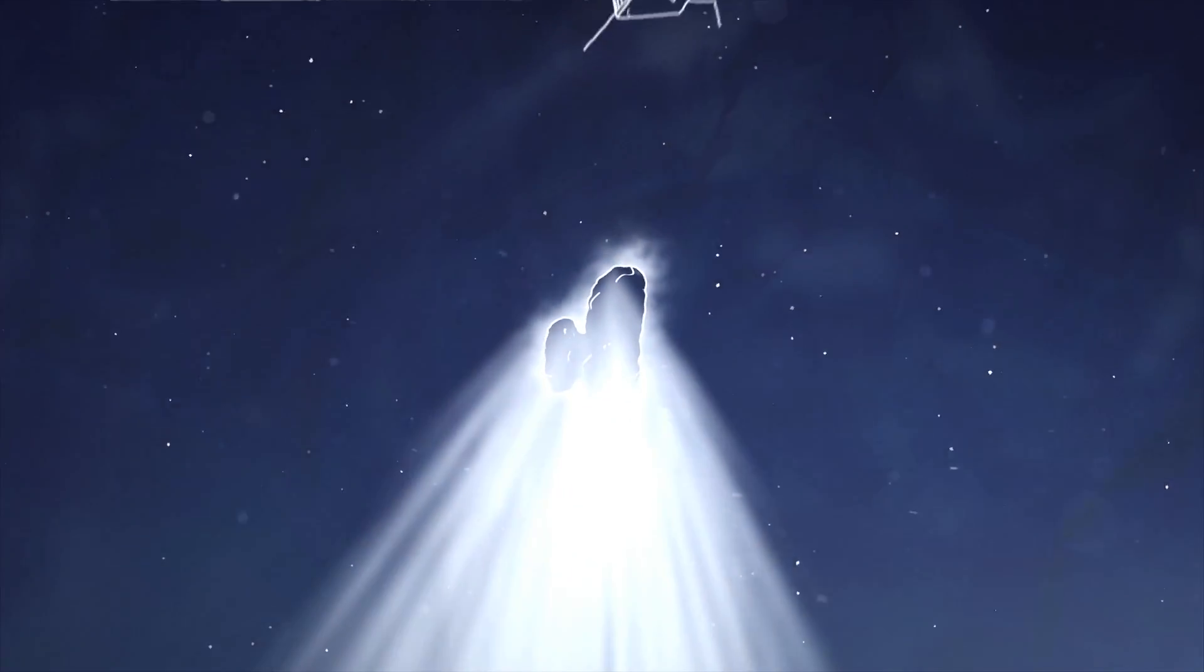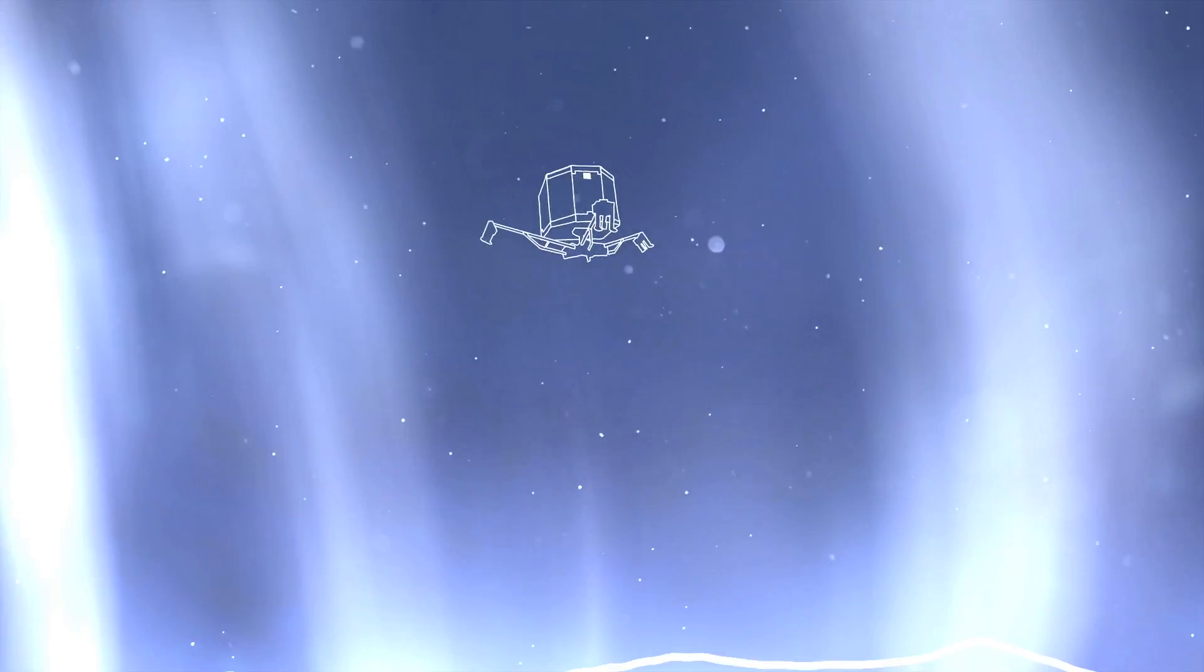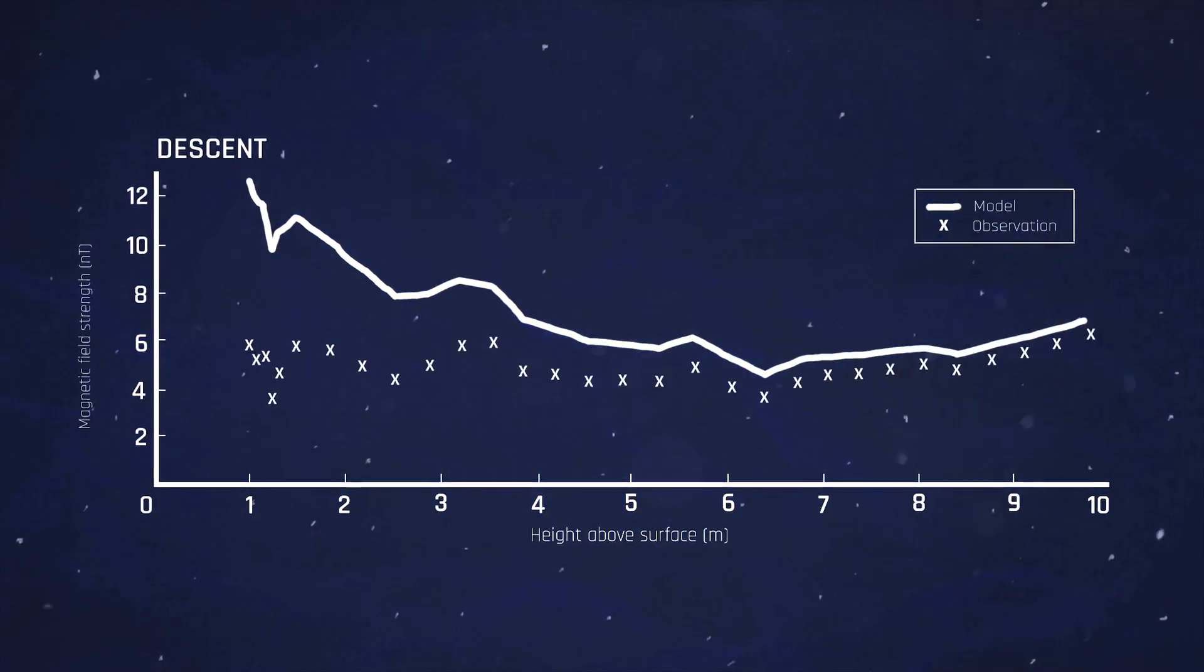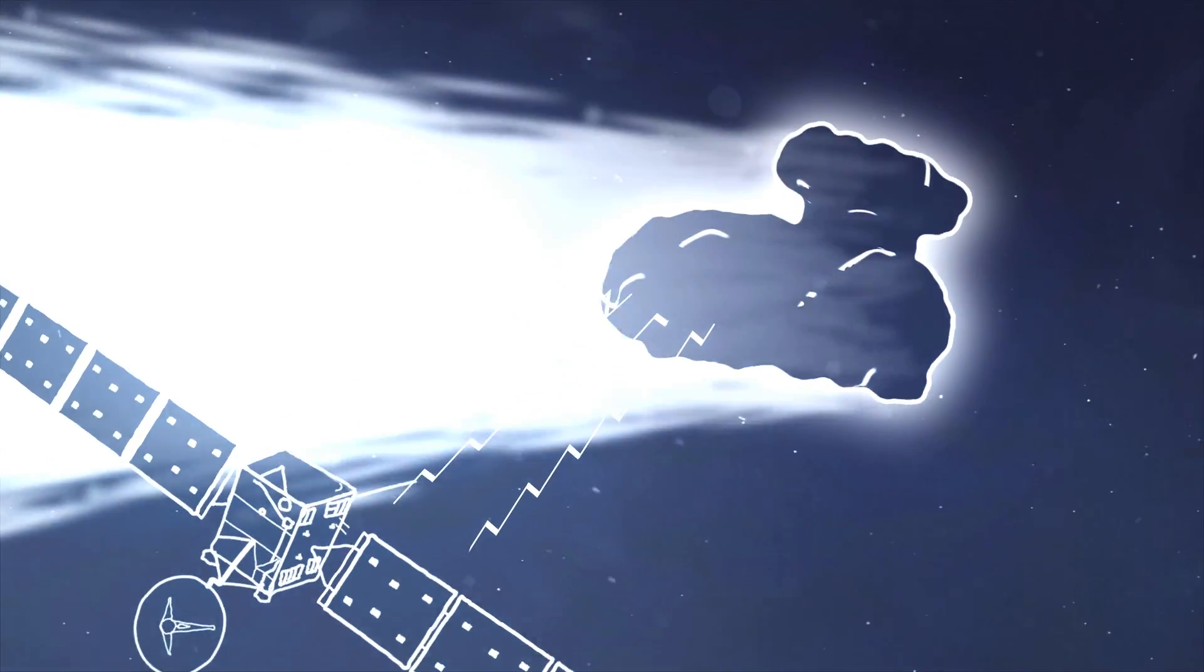This is where Rosetta comes in. Rosetta is the first mission to orbit around a comet, the first mission to land on a comet. This lander carried with it a magnetometer which measures the magnetic field. This was the first opportunity to look for records of this ancient magnetic field. No one really knew what to expect.